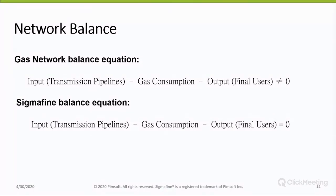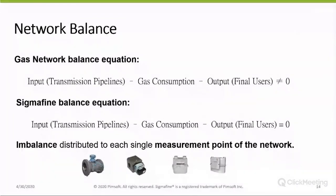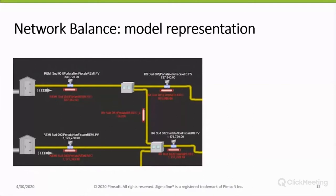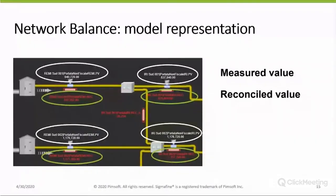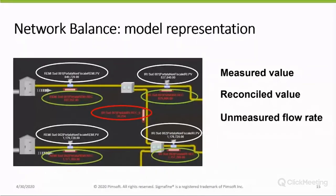The Sigma Fine imbalance equation is similar — input minus gas consumption minus output — but the algorithm sets this equation equal to zero. The question then becomes: where is the imbalance identified in the previous analysis? Through Sigma Fine, the imbalance is distributed to each single measurement point of the network, to each meter, taking into consideration the different characteristics of each single measurement point. Looking at a part of a larger model, the user opening Sigma Fine can see measured values and reconciled values. Another important capability is that we can calculate the unmeasured flow rate — if we have enough information, we can calculate the flow value in pipelines where there is no meter.